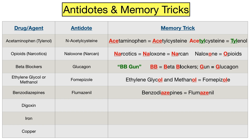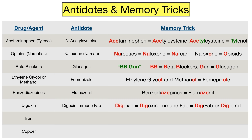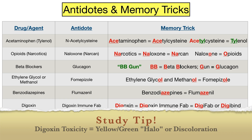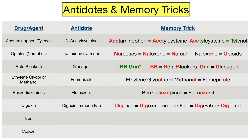The next medication is digoxin, which can be used for heart failure, arrhythmias, among other indications. Do you know the antidote? It's digoxin immune fab, which you may know by the brand names Digifab or Digibind. This is another easy one to remember because they all start with D-I-G. Digoxin toxicity can also cause ocular symptoms commonly tested on medical and board exams — they are often described as yellow-green halos or discoloration.